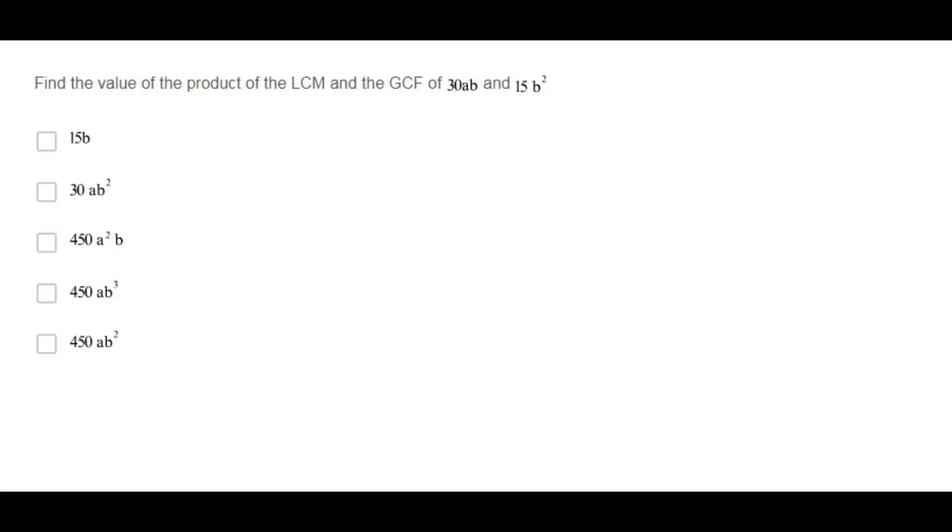Find the value of the product of the least common multiple and the greatest common factor of 30 times a times b and 15 times b squared. The best way to solve this question is by applying the following formula.